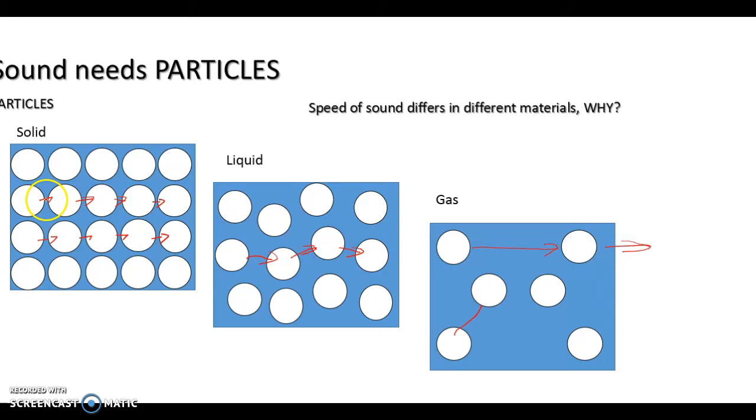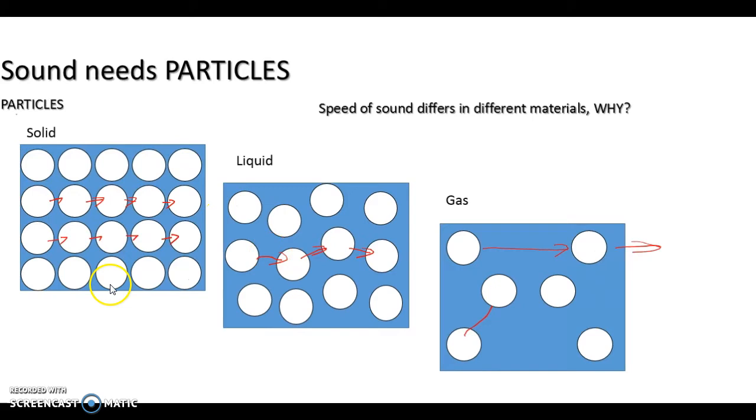So that's why the speed of sound differs in different materials. And it's also why sound will travel further through a solid than it will a liquid or a gas. It only has to travel this little bit here, so there's not much energy that's needed to actually move the particle to the next one. Whereas in a liquid and a gas, it actually takes that little bit more energy to move that particle. Each time it does that, it takes away some of the energy from the sound, which is why it doesn't travel as far.